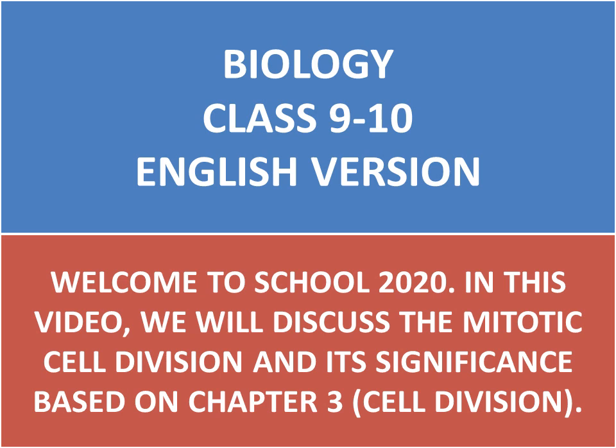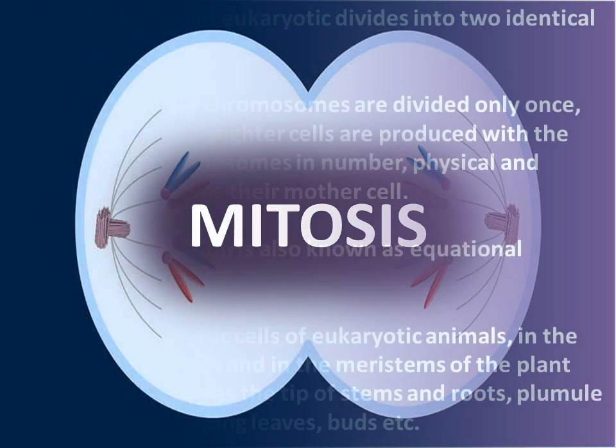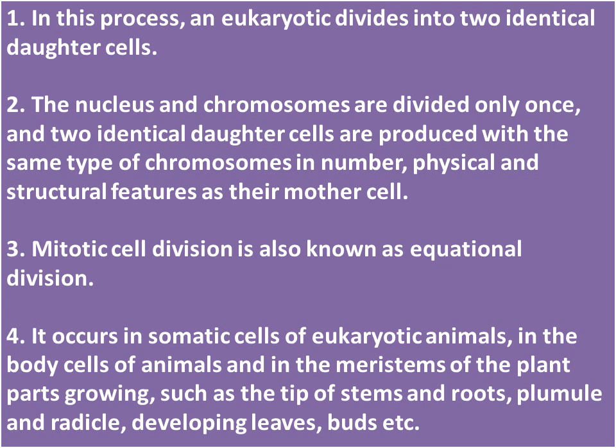Welcome to School 2020. In this video we will discuss mitotic cell division and its significance, based on Chapter 3: Mitosis. In this process, a eukaryotic cell divides into two identical daughter cells. The nucleus and chromosomes are divided only once, and two identical daughter cells are produced with the same type of chromosomes in number, physical, and structural features as their mother cell. Mitotic cell division is also known as equational division.